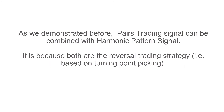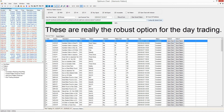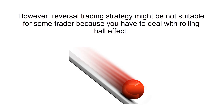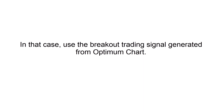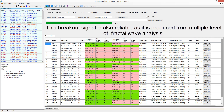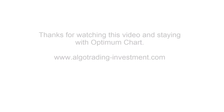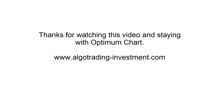Pairs trading signals can be combined with harmonic pattern signals, as both are reversal trading strategies — these are robust options for day trading. However, reversal trading strategy might not be suitable for some traders because you have to deal with the rolling ball effect. In that case, use the breakout trading signal generated from Optimum Chart. This breakout signal is also reliable as it is produced from multiple levels of fractal wave analysis.